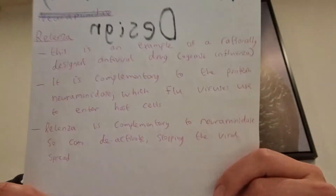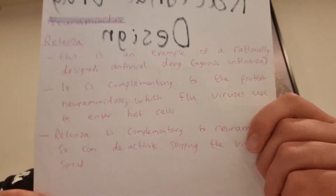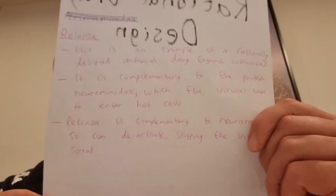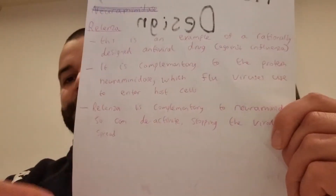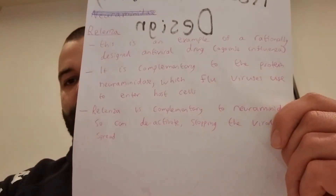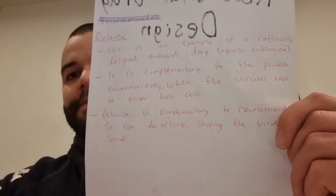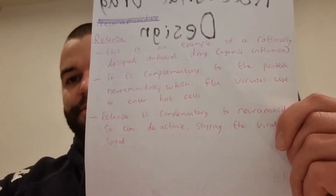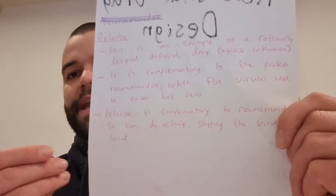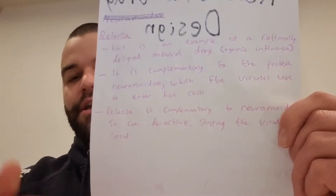So Relenza, which is designed to bind with the neuraminidase from the influenza virus, has been rationally designed by studying the properties of that enzyme and being made to be complementary to it.